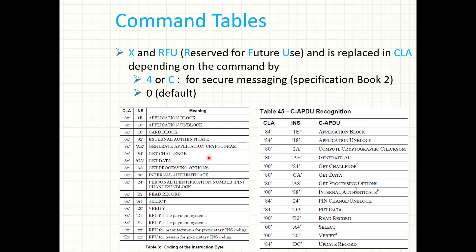Here are two tables of commands. The one on the left is taken from the EMV specification — it specifies the class and some instruction bytes, with X as don't care. By default those X values can be replaced by zero, four, or C for secure messaging. The table on the right is an implementation by PayPass for the M-Chip — those are the MasterCard chips — where X has been replaced by either zero or four.